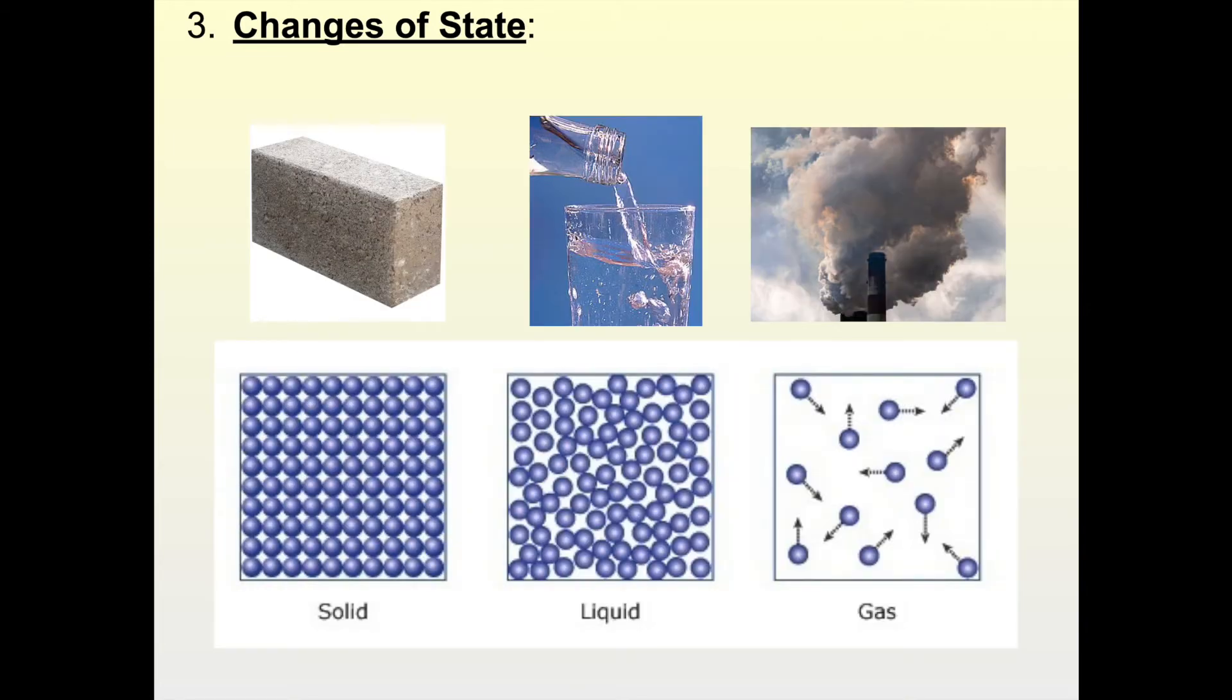Now our third type, our last type here, is changes of state. If you heat up matter, like if you heated up solid ice for example, it's in a solid state. Well if you heated it up to high enough temperature, what state of matter would it change to? That's right, it would change into a liquid. So there's a number of different examples of ways that things can change between the different states. What are the three states of matter that we normally think about on earth? That's right, solid, liquid and gas. We're going to look at how those three states of matter can change between each other. We'll look at some examples.